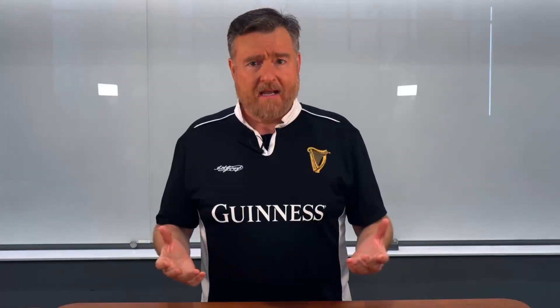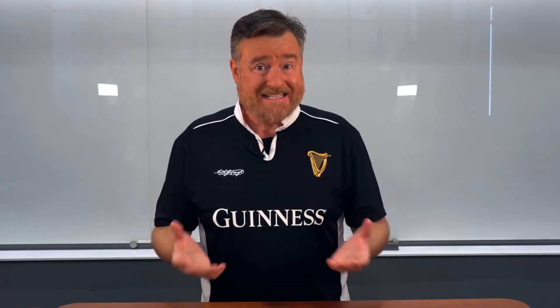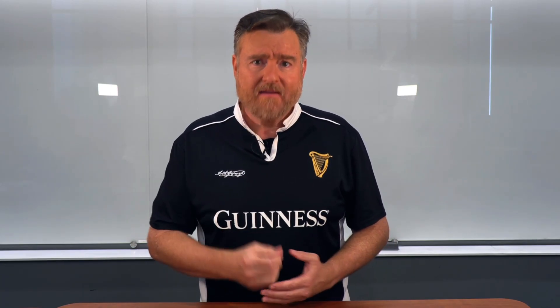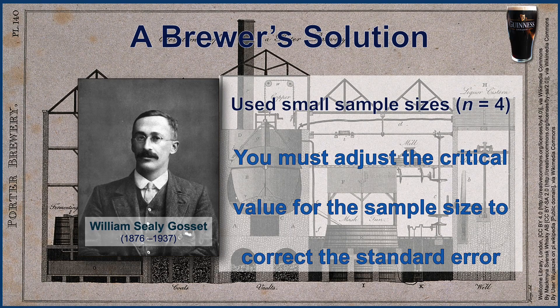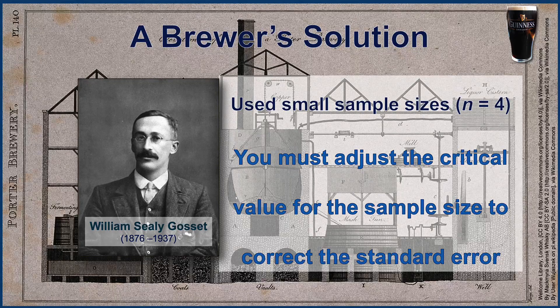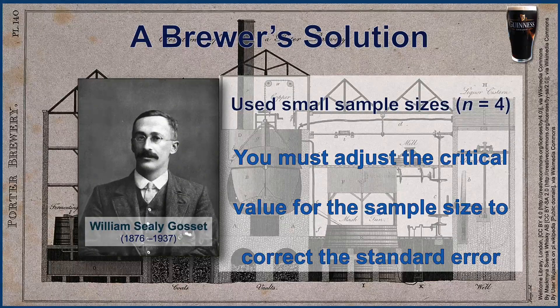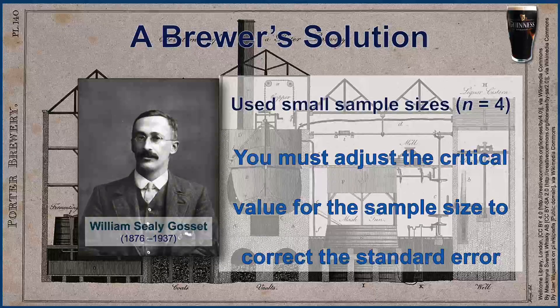The good news about systematic bias is that once you understand the magnitude of that bias, it's very easy to correct for. And that is what Gossett did. He began creating tables of how much he needed to adjust the critical value based on the sample size to correct the standard error. And this became known as the T distribution.